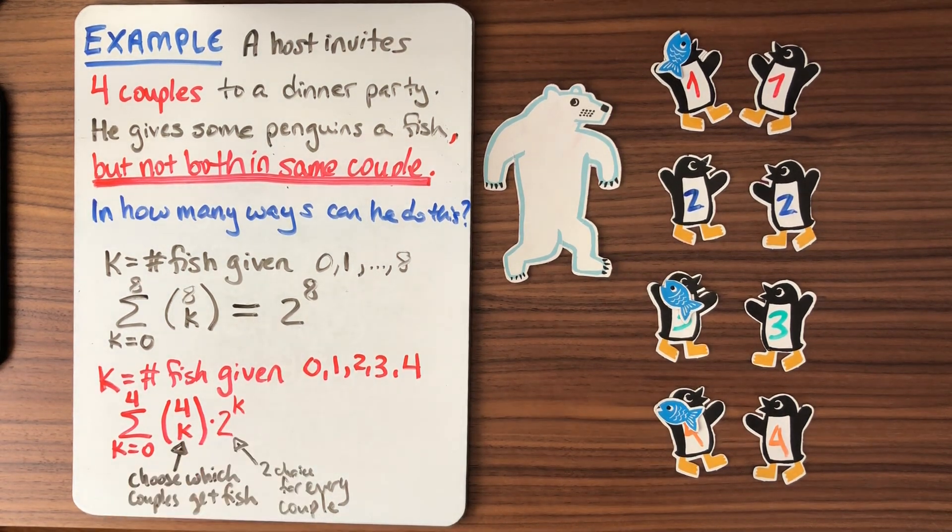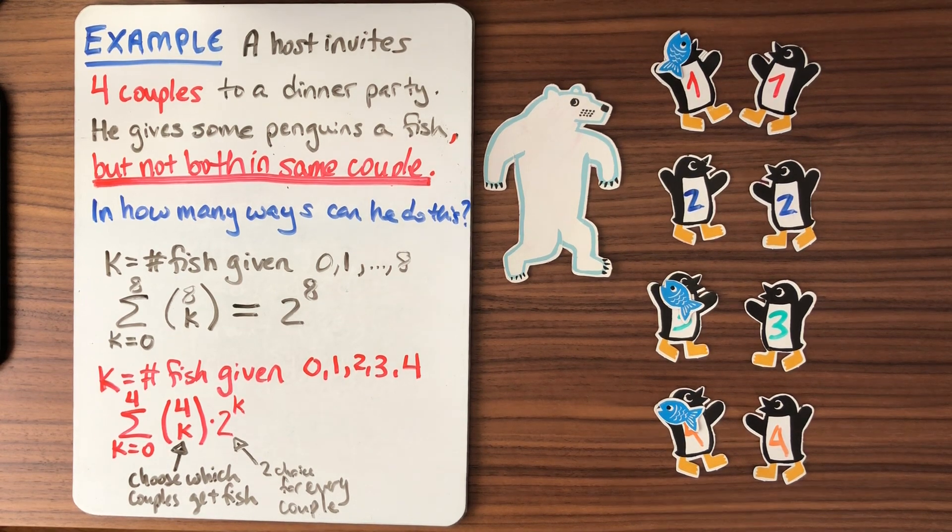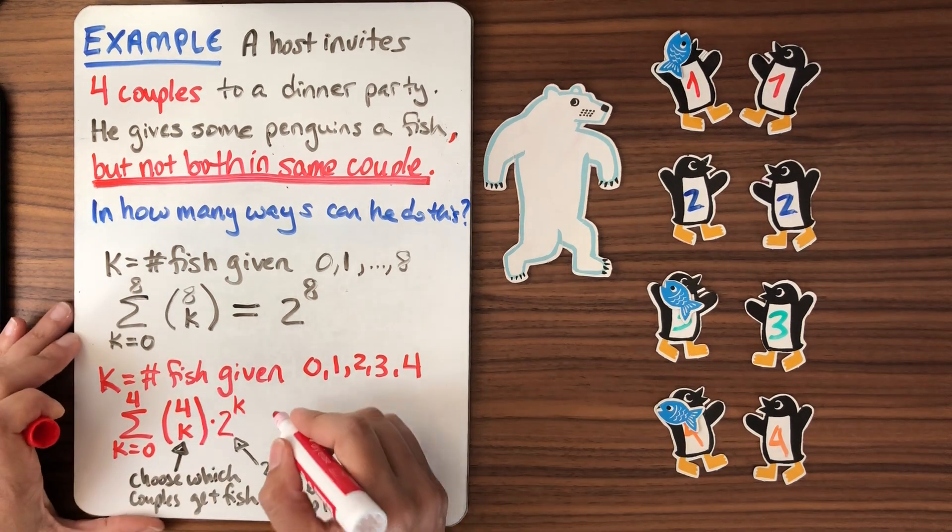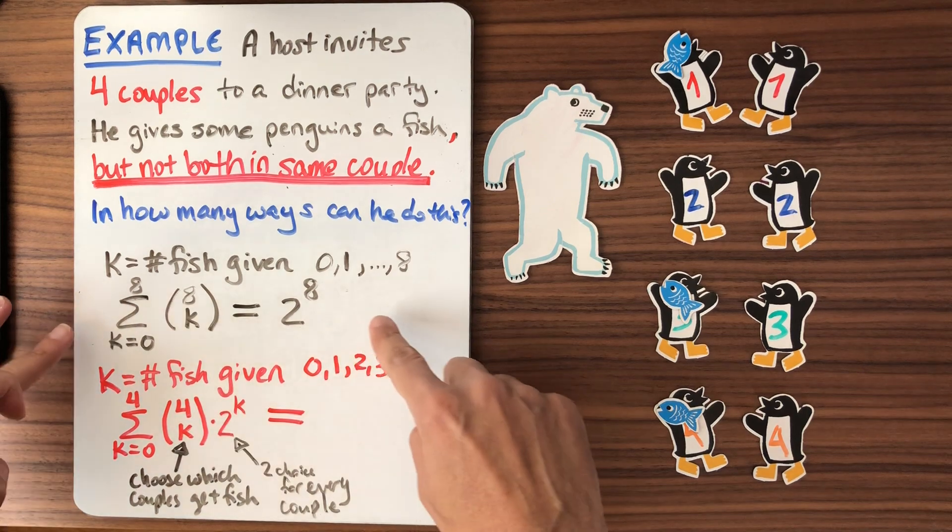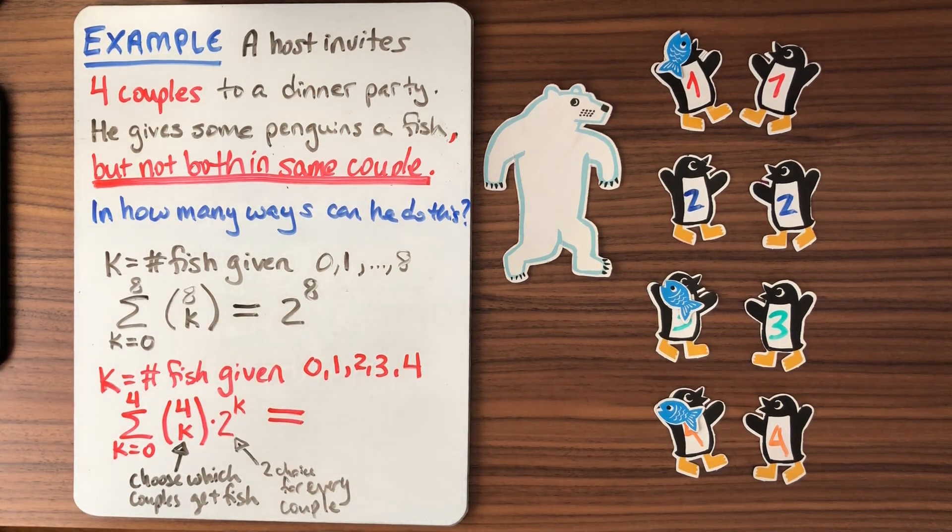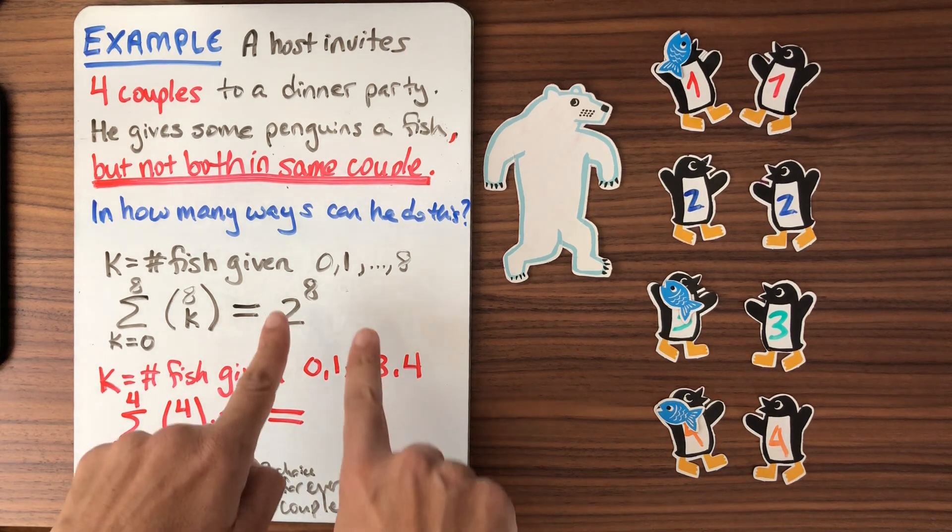But just as we did up here, we found there was another way that we could count this problem, okay? So let's see what happens in this paradigm when I count it a different way. So how do we do it up here? Again, we always go back to our model example that's a little simpler to get inspiration. So here we're summing over this variable of K, which represents the number of fish. So here what did we do?